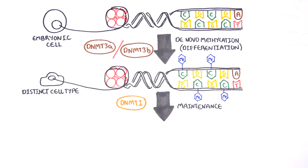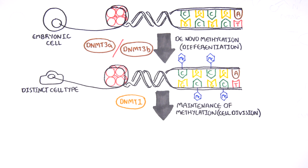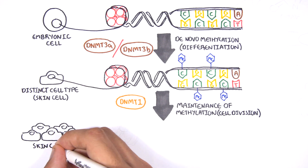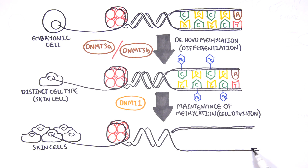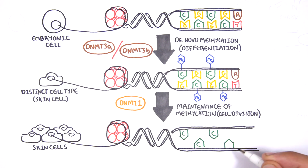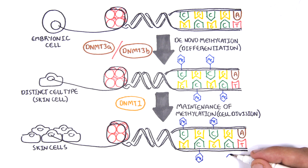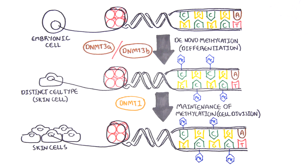DNMT1 is responsible for the maintenance of DNA methylation following differentiation, and is active during cell division thereafter. The methylation patterns of each cell type are different, and this reflects the gene expression pattern of the cell. So in this case, we have one skin cell becoming many skin cells, each with a unique methylation pattern expressing certain genes.